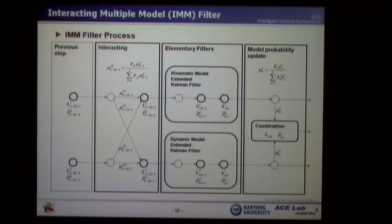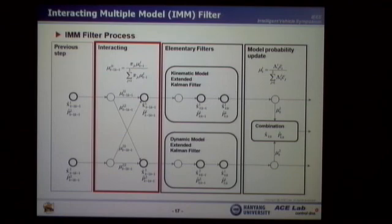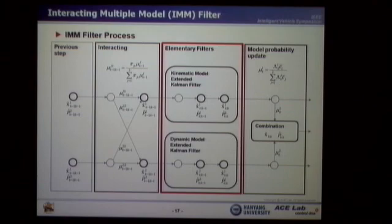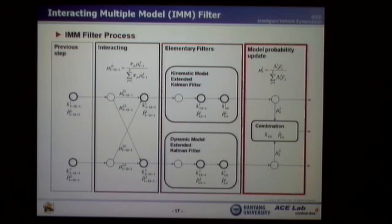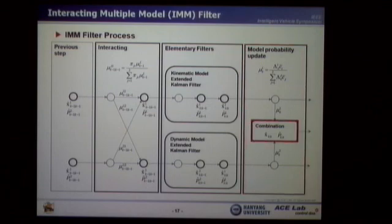This block diagram shows the process of the interacting multiple model filter. The process is composed of four steps. The first step is the interacting step, where the vehicle state is re-initialized by the interacting process. The second step is the elementary filters, where the kinematic model extended Kalman filter and the dynamic model extended Kalman filter estimate the vehicle state respectively. The third step is the model priority update step, where the filter determines which model is appropriate for the driving condition. The final step is combination, where using the model priority, it combines vehicle position estimates from the kinematic and dynamic model extended Kalman filters.